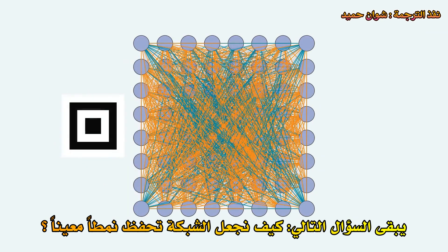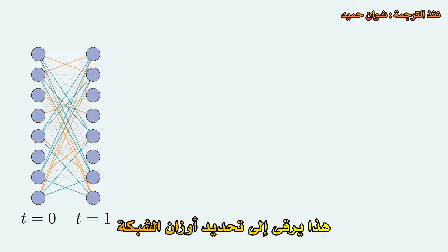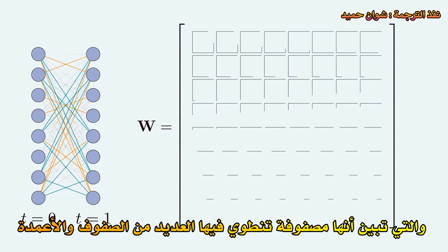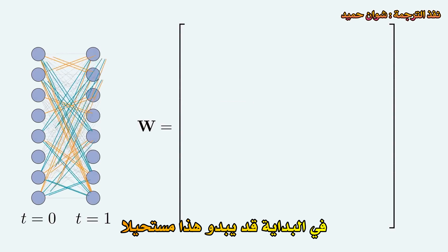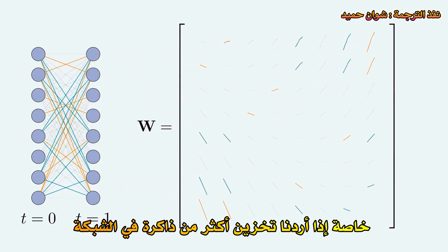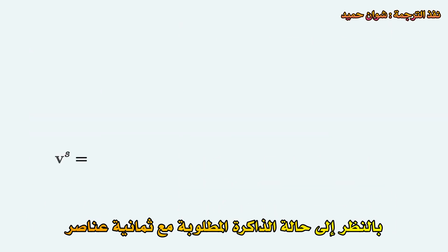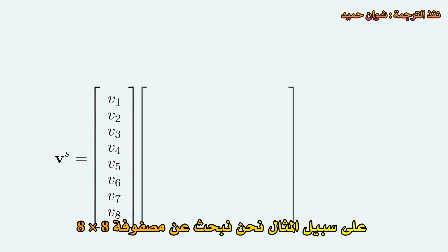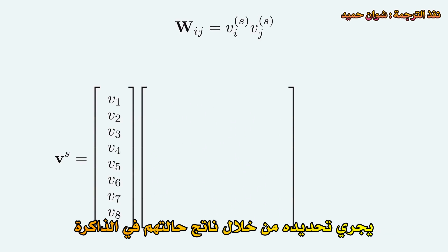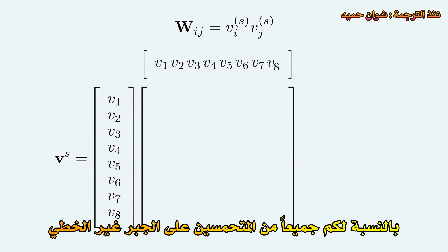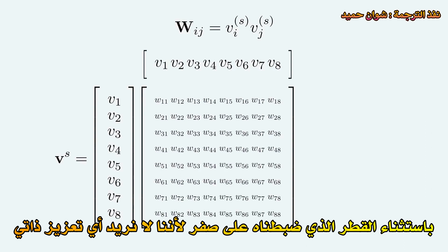That leaves the following question: how do we make the network memorize a certain pattern? In other words, how can we design the stable states of the network? This amounts to setting the weights of the network, which turns out to be a matrix with as many rows and columns as there are neurons. For example, the state of this neuron is determined by the weights in this row of the matrix. At first, this might seem impossible, especially if we wish to store more than one memory in the network. So here is the magic rule: given a desired memory state, the weight between two neurons i and j is determined by the product of their states in the memory. For those keen on linear algebra, this means the matrix is an outer product of the memory vector with itself, except for the diagonal which we set to zero, since we don't want any self-reinforcement.